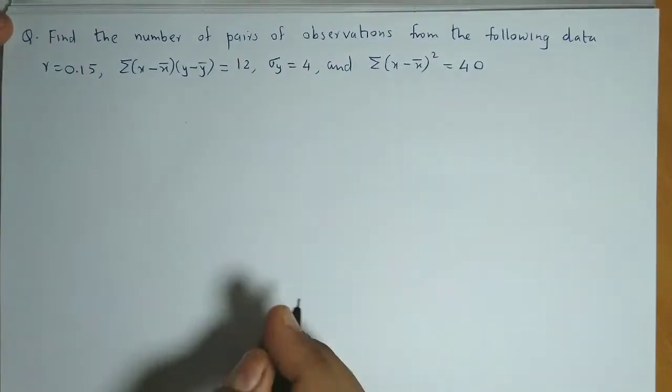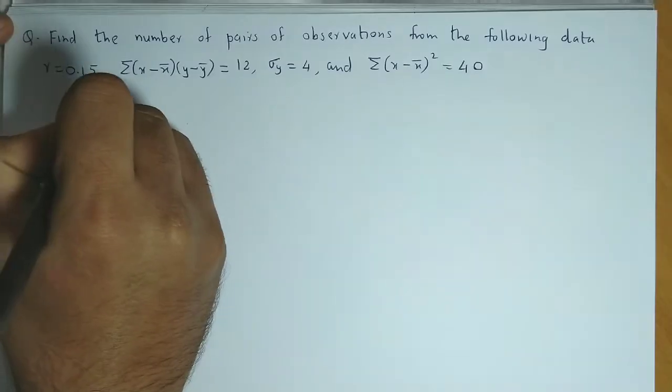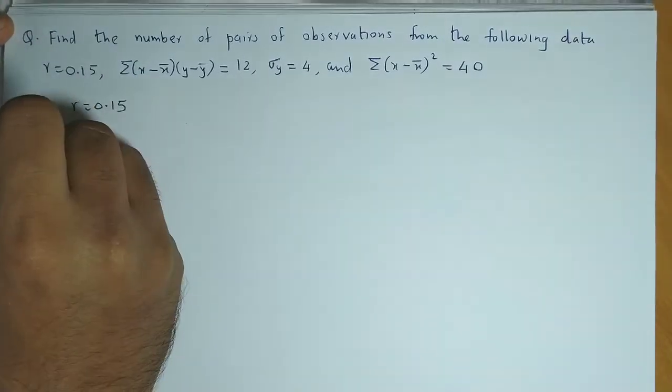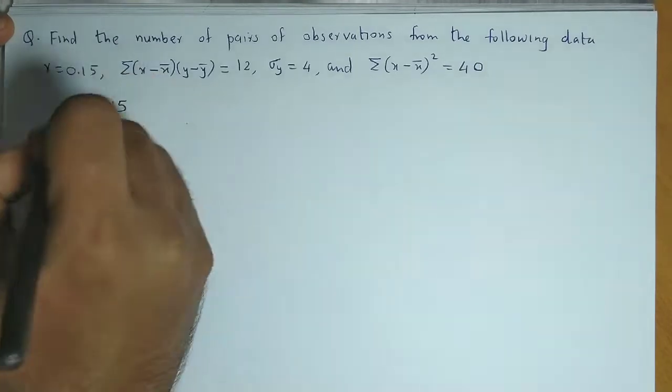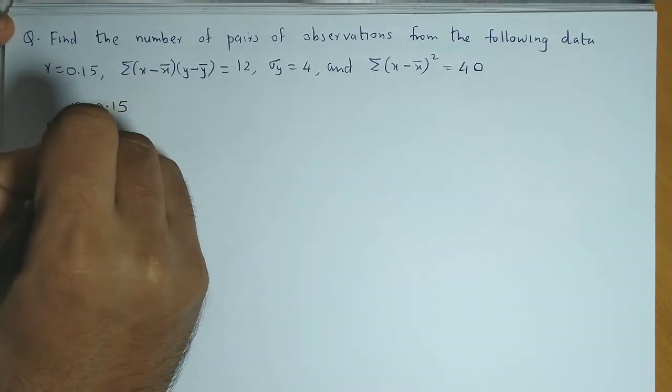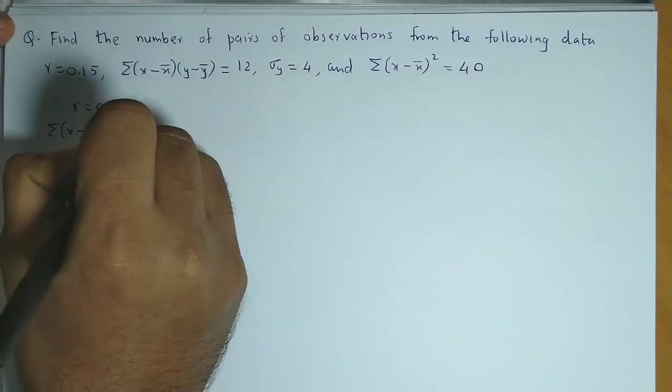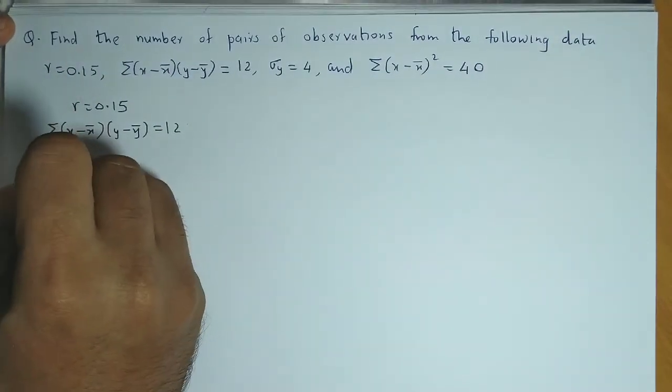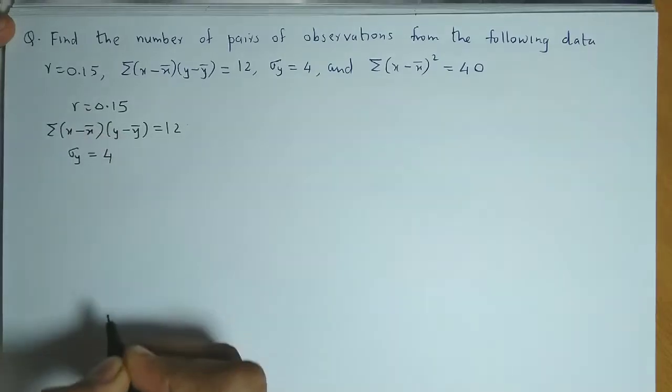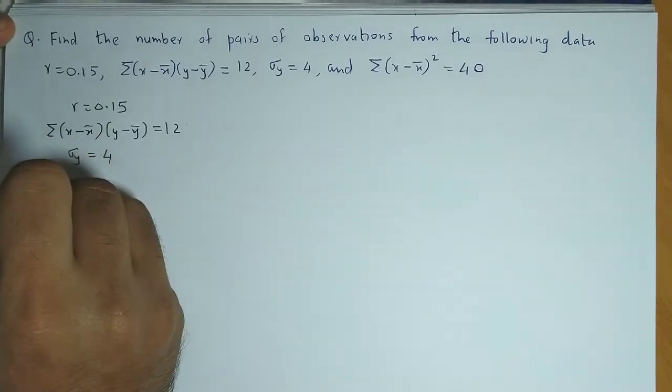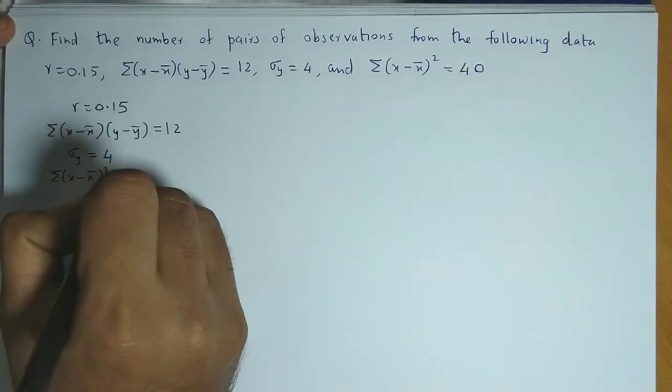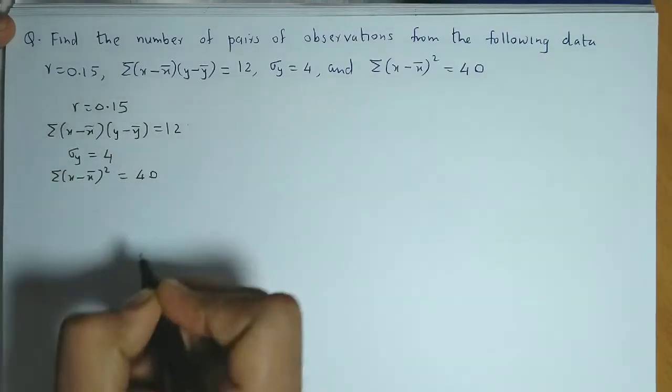So the value for r is given as 0.15. Then summation of (x - x̄)(y - ȳ) is given as 12. Standard deviation of y is equal to 4 and summation of (x - x̄)² is equal to 40.